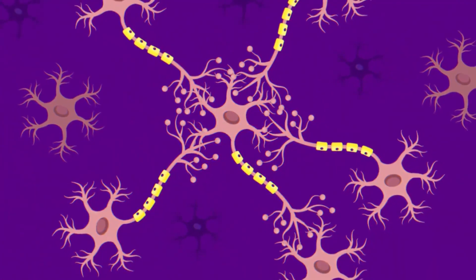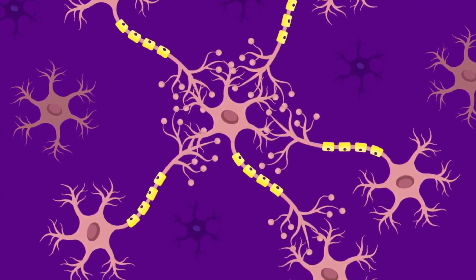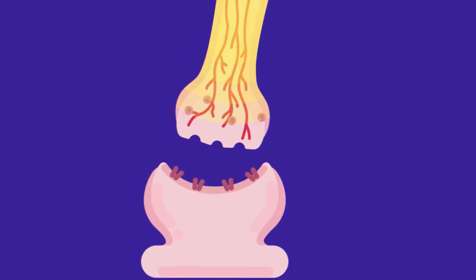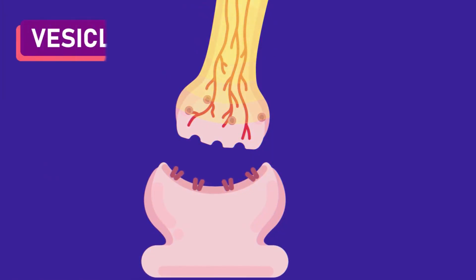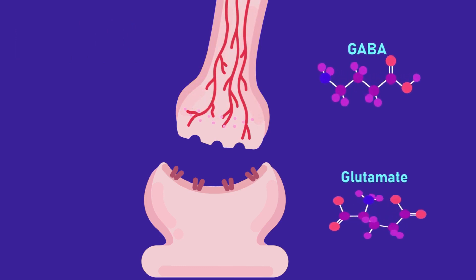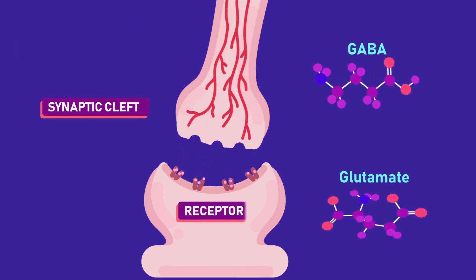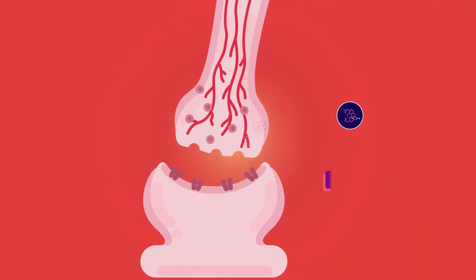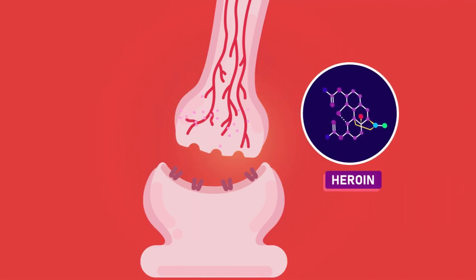Between one neuron and another, there are synapses to transfer the signal. When the signal arrives, the neurotransmitter-containing vessels will open through a complex sequence. The neurotransmitter, which may vary in substance, then moves to the synaptic cleft and arrives at the receptor molecule at the other end. Some drugs, like heroin, will alter this sequence and affect our brain.